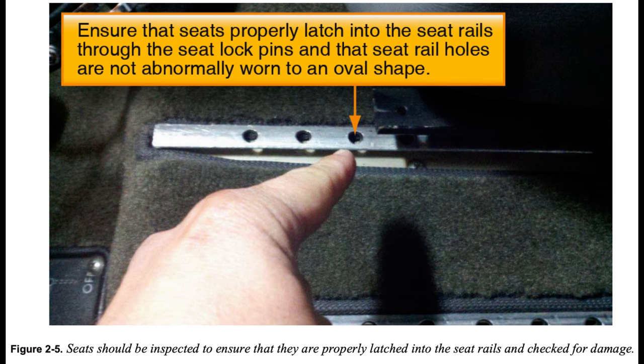Seats should be inspected to ensure that they properly latch into the seat rails through the seat lock pins and that seat rail holes are not abnormally worn to an oval shape. The windshield and windows should be inspected to ensure that they are clean and free from cracks and crazing. A dirty, scratched, or severely crazed window can result in near-zero visibility due to light refraction at certain angles from the sun.